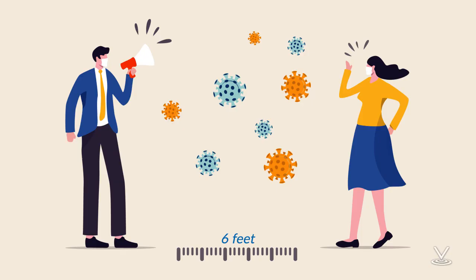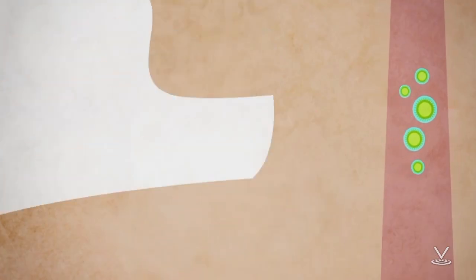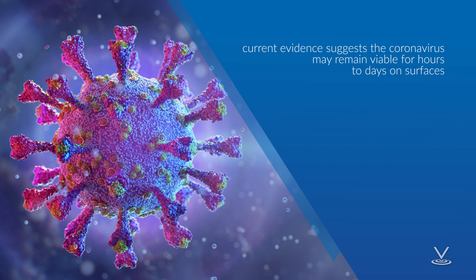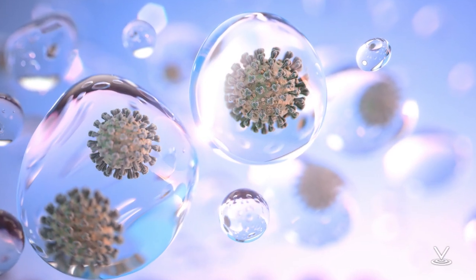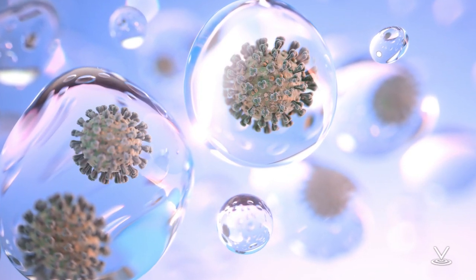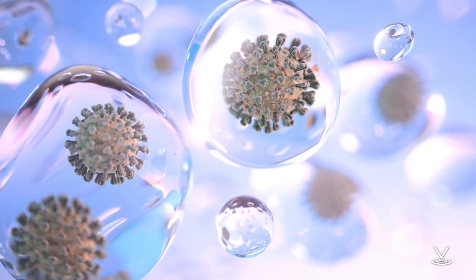There is much to learn about COVID-19. Based on what is currently known about the virus, spread from person to person happens most frequently among close contacts within about 6 feet. This type of transmission occurs via respiratory droplets. Transmission of the coronavirus to persons from surfaces contaminated with the virus has not been documented at the time this course was published. However, current evidence suggests that the coronavirus may remain viable for hours to days on surfaces made from a variety of materials. Transmission of coronavirus in general occurs much more commonly through respiratory droplets than through objects or materials likely to carry infection, such as clothes, utensils, and furniture.